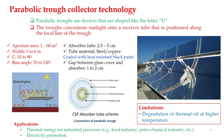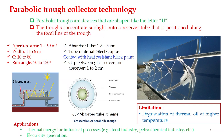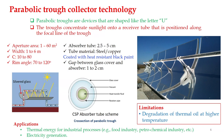Parabolic troughs are devices shaped like the letter U. The trough concentrates sunlight onto a receiver tube positioned along the focal line of the trough. Its aperture area varies from 1 to 60 square meters and width is 1 to 6 meters. Concentration ratio varies from 10 to 80 and rim angle varies from 70 to 120 degrees.